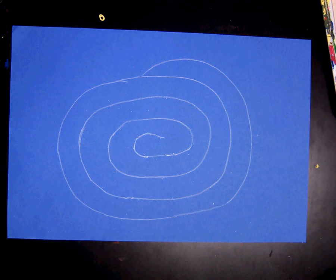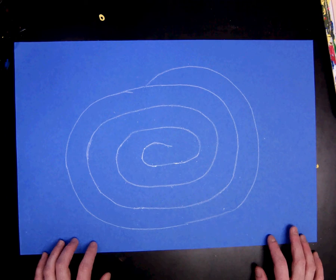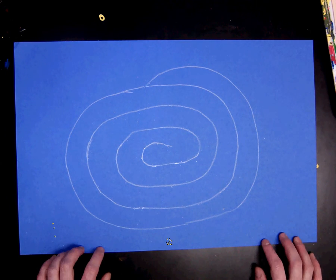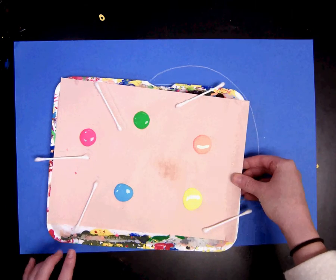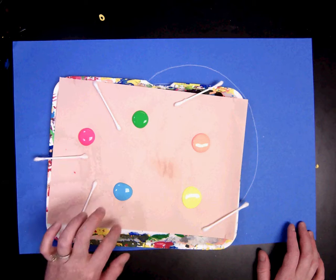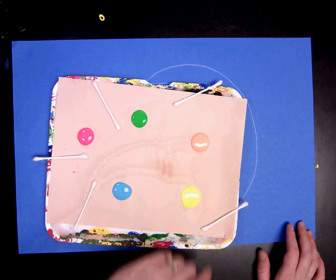Next we are going to be doing dots, lots of dots, on our snake. We are going to be using neon colors. You will get a red, or kind of a pink, a blue, a green, a neon orange, and a yellow.